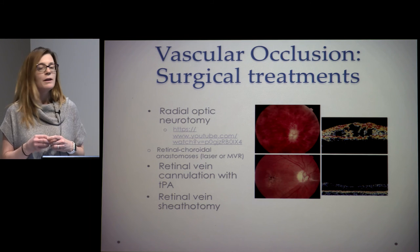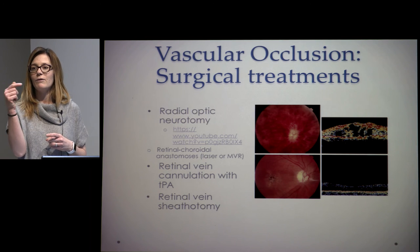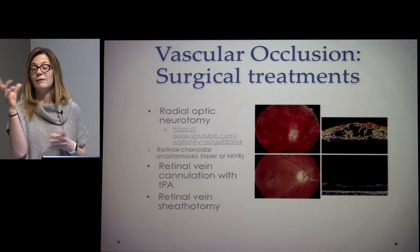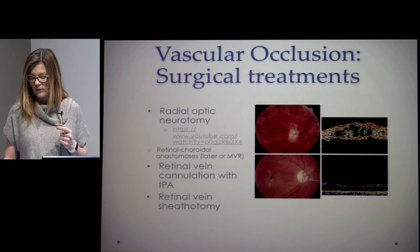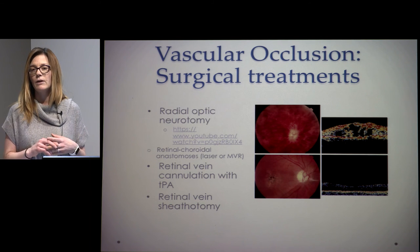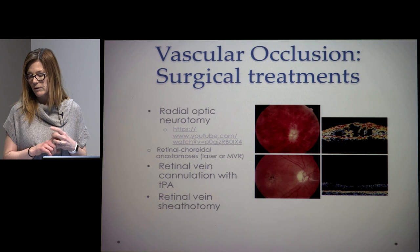The important things to know for OCAPS are the key studies: SCORE is really critical, BVOS and CVOS, and the CRUISE/BRAVO studies. BVOS set macular grid as the standard for branch vein occlusion macular edema. BRAVO and CRUISE were the ranibizumab trials for BRVO and CRVO respectively. SCORE showed no benefit of intravitreal triamcinolone over laser for BRVOs, but showed a benefit for CRVOs. Those highlighted studies are what you'd see on testing.